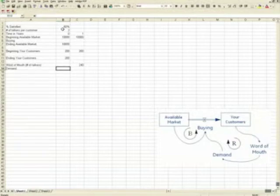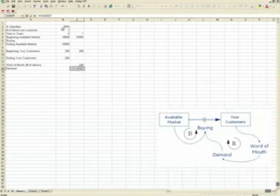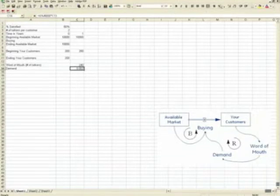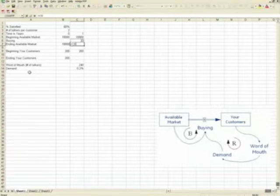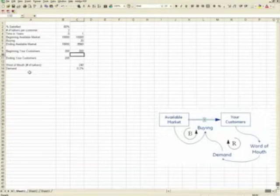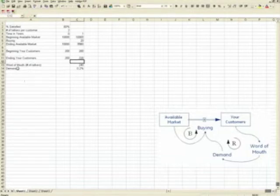Now you have the demand. If you recall our equation, it was rise over run: 5% divided by 6,000 times the number of talkers. So the demand starts out very small at 0.2%. The buying, actually we have that already up here. Buying is really the demand times the number of available customers. Therefore 20 customers will buy in this first year. Now to finish out the model: the ending available market is the 10,000 minus the 20. The number of customers you have is the 200 plus the number that are buying. That buying takes away from one stock and adds to another.